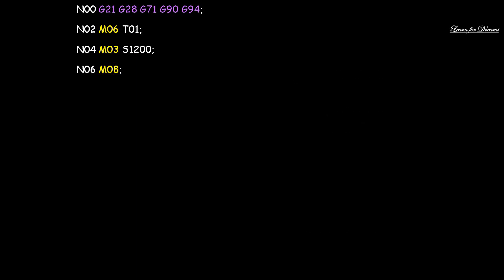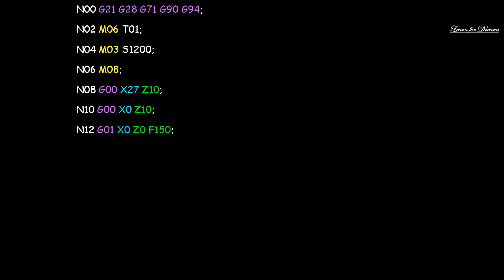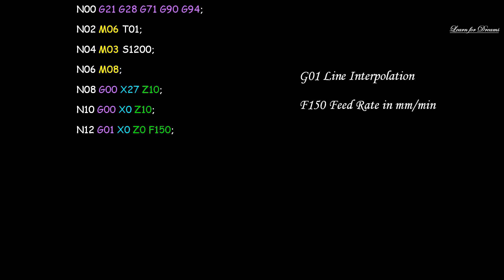Then N08: G00, X27, Z10 - G00 is rapid positioning, we bring the tool nearer to the workpiece. Then we will take the tool to the origin: N12: G01, X0, Z0, F150 - G01 is linear interpolation and F150 is feed rate in mm per minute.